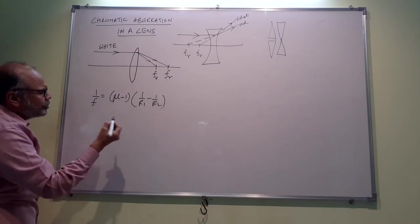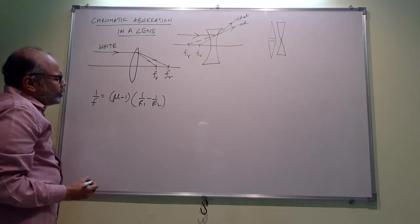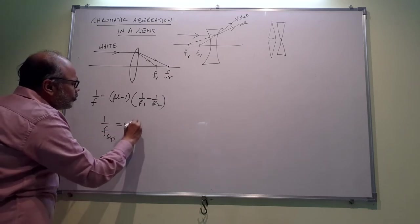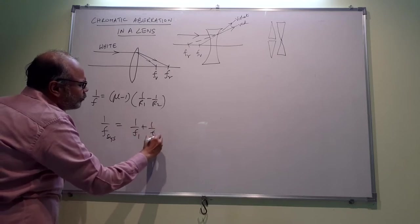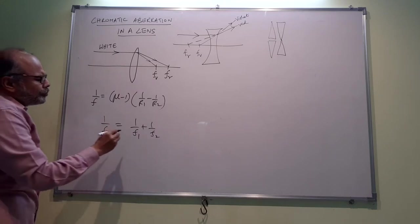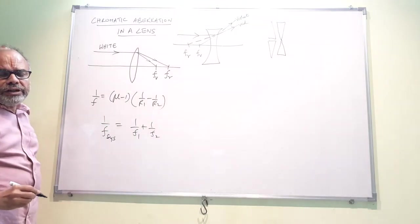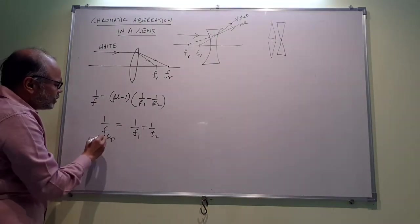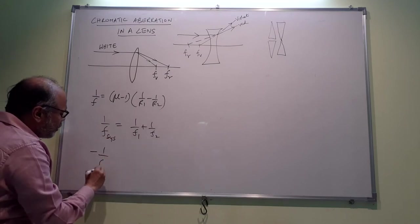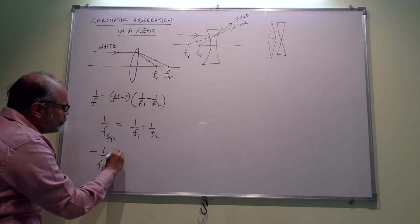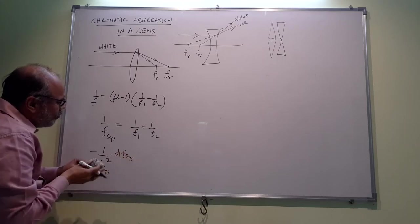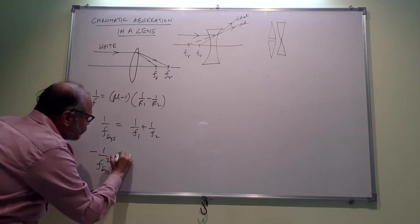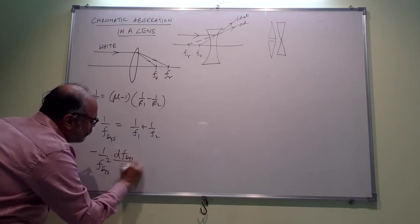Supposing we have two lenses of focal length f₁ and f₂. So the resultant focal length of the system would be 1/f = 1/f₁ + 1/f₂. Now we know all these are a function of refractive index μ. So let us differentiate this with respect to μ. This would be -1/f_system² × df_system/dμ.